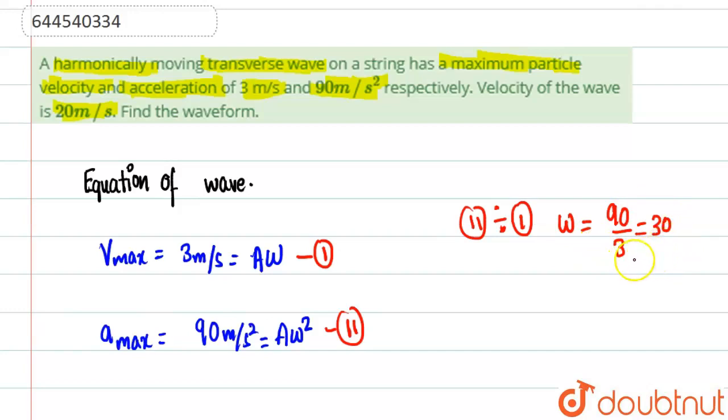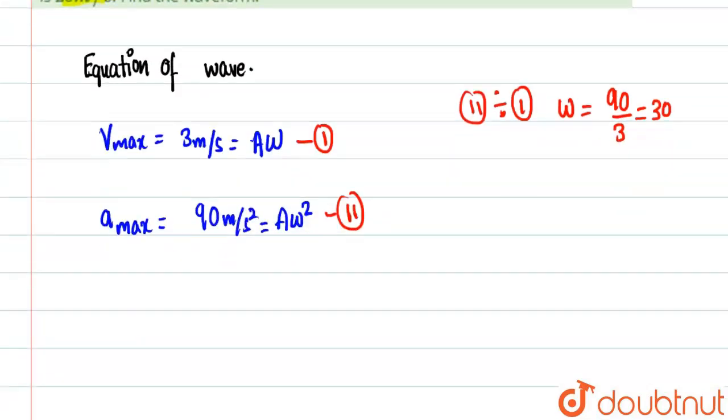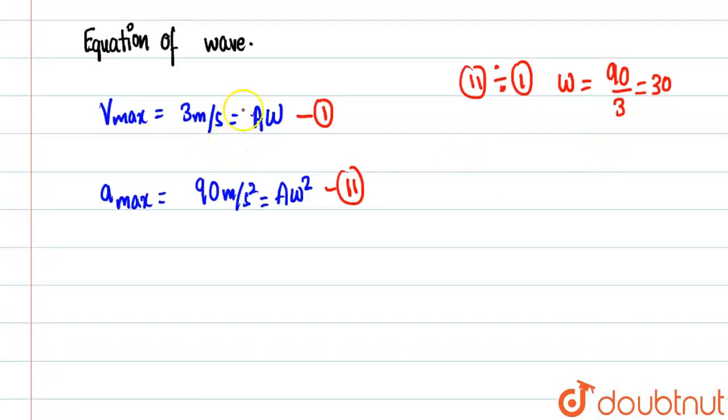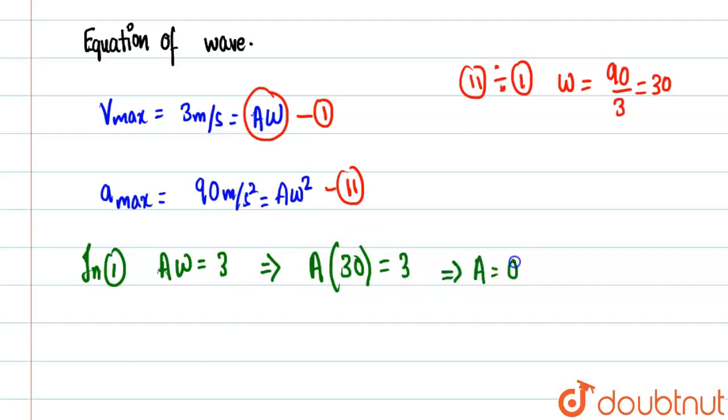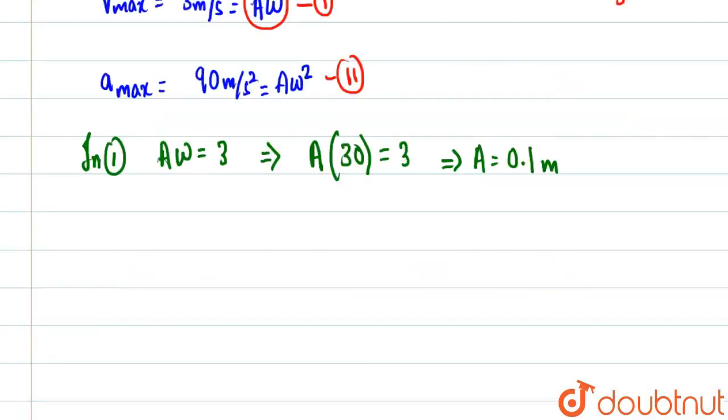So we got omega, now we'll put this value in equation one to find out A. In equation one, we have A·ω = 3 m/s. We'll put the value of omega: A × 30 = 3, so from here A will be equal to 0.1 meters.